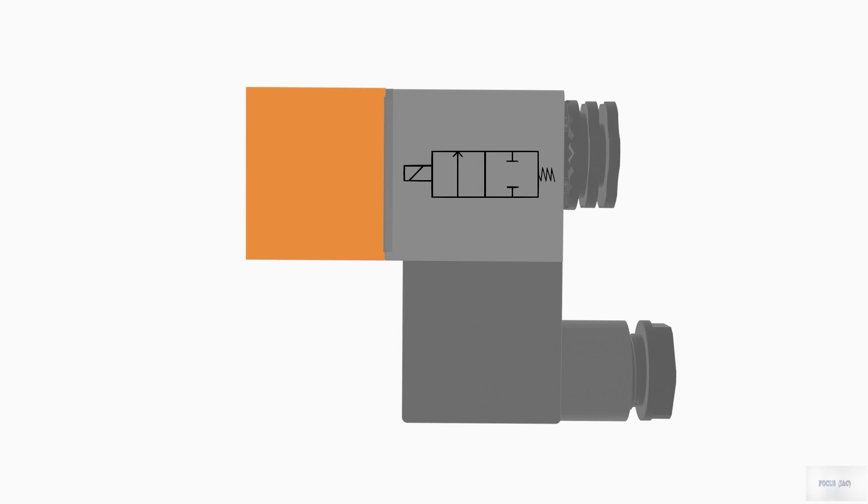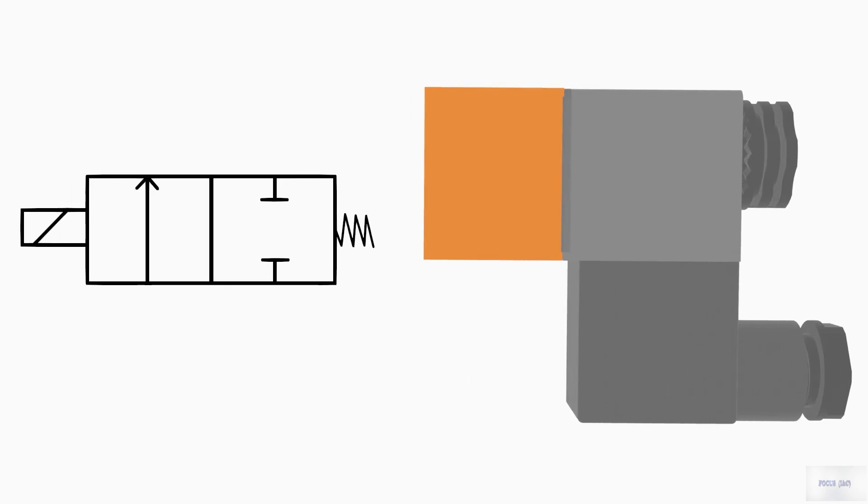The two-way solenoid valve has such a symbol. Each square in the symbol indicates a specific position. Therefore, this side is one position and this side is two position.